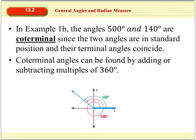Now back in example 1B, when we were talking about the angle of 500, we also discussed that 140 degrees was really the same angle as 500 degrees. And that's because these angles are said to be coterminal. They're coterminal because the two angles are in standard position and they have the same terminal angle. So this side right here, they share, it's the terminal side of both of their angles. So whether I go around a full time plus another 140, or just the 140 degrees, they both share that common terminal side.